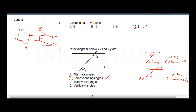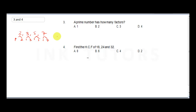Question three: a prime number has how many factors? The definition of a prime number is that it has exactly two factors — that's one and itself. For example, prime numbers include 2, 3, 5, and 7. The factors of 2 are 1 and 2; factors of 3 are 1 and 3; factors of 5 are 1 and 5; factors of 7 are 1 and 7. So the correct answer is two factors.